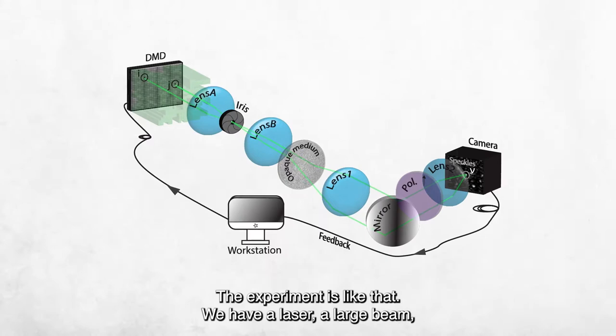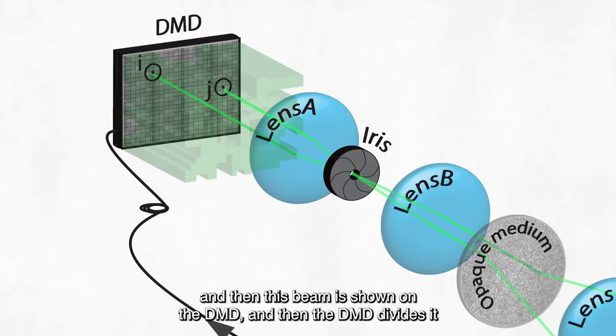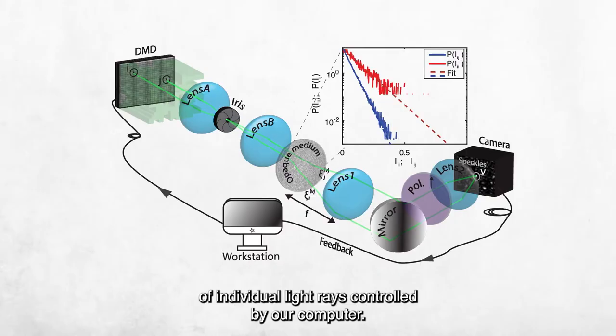The experiment is like that: we have a laser in a large beam, and then this beam is shown on the DMD, which divides it exactly into thousands or even millions of individual light rays controlled by our computer.